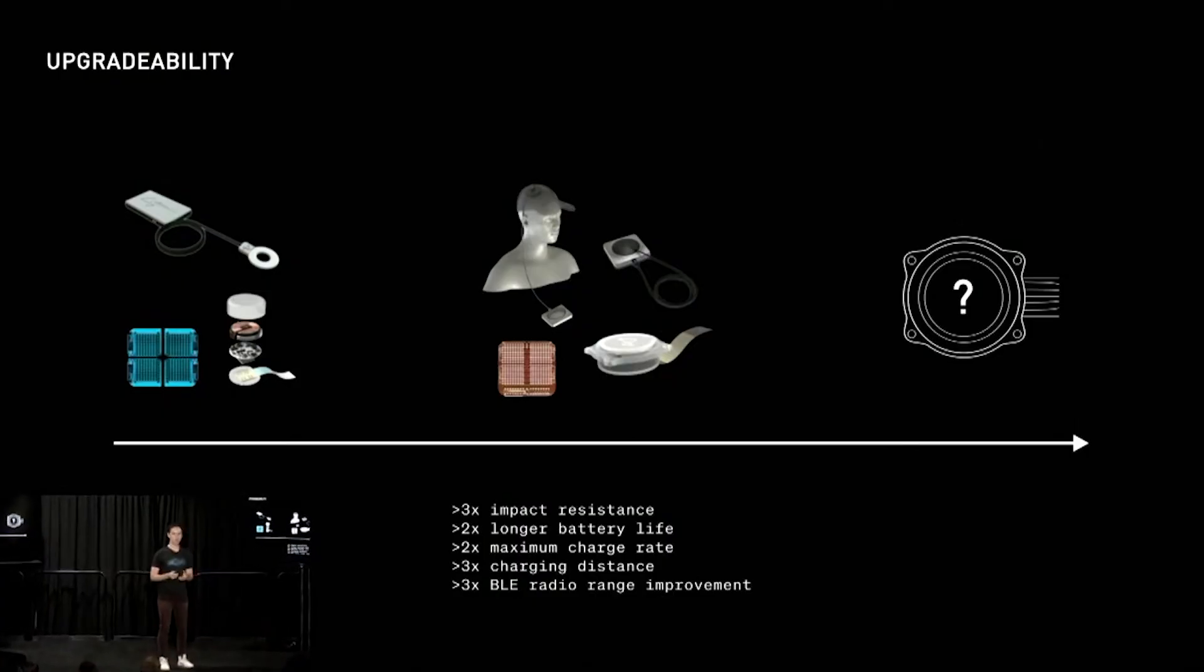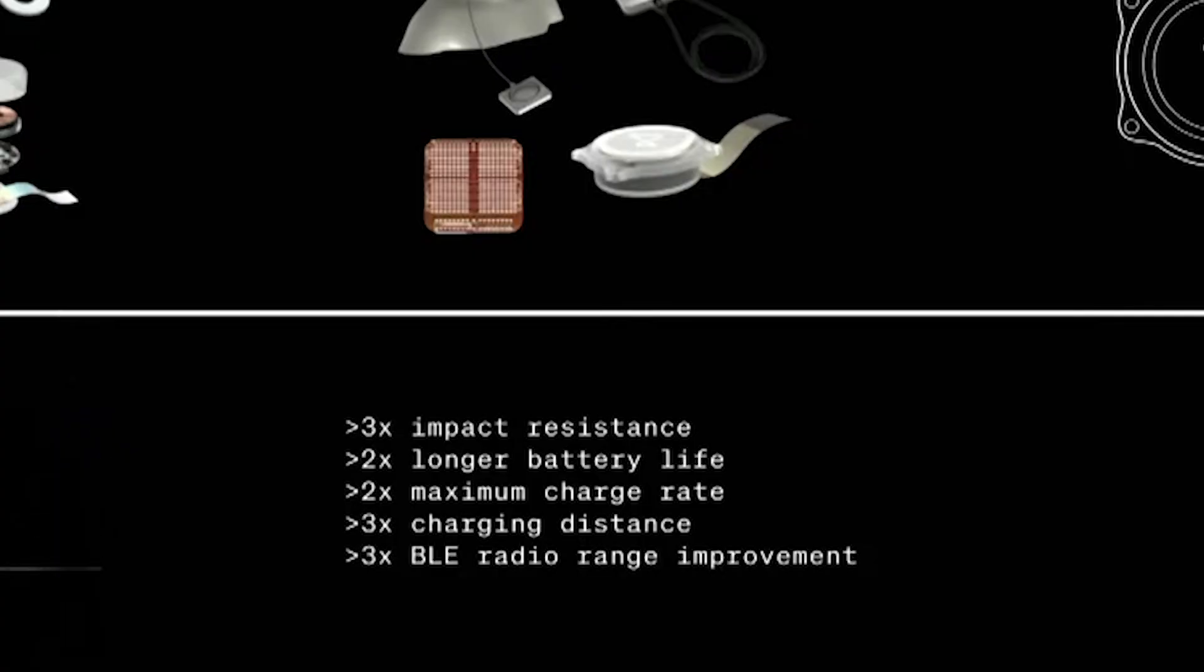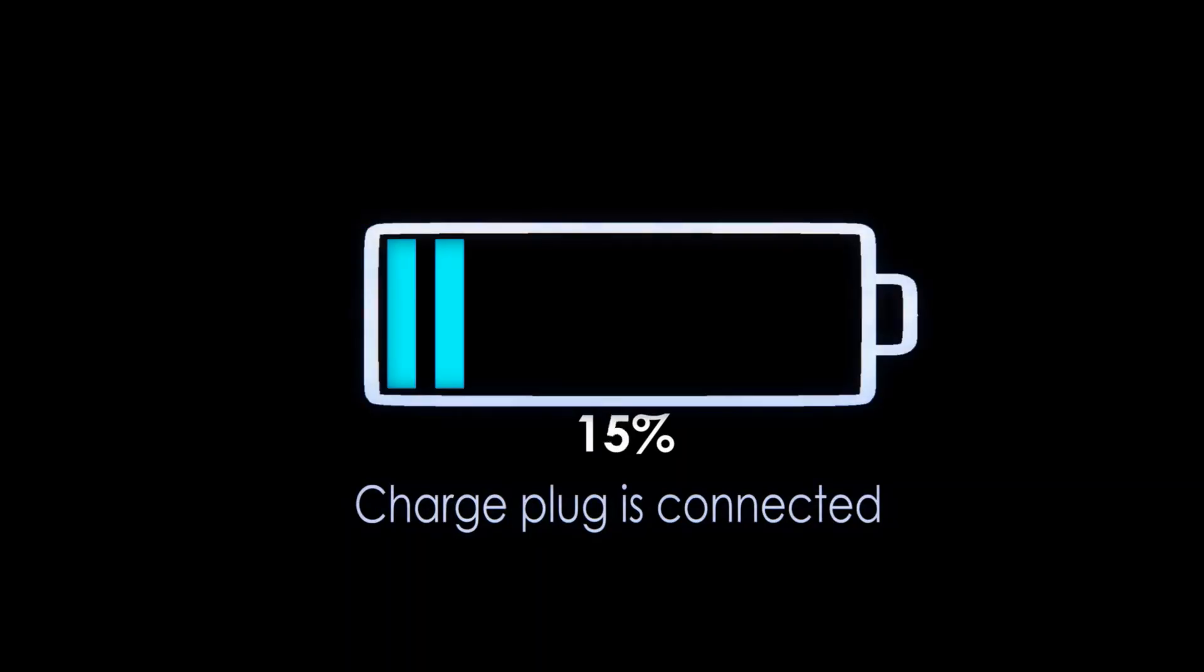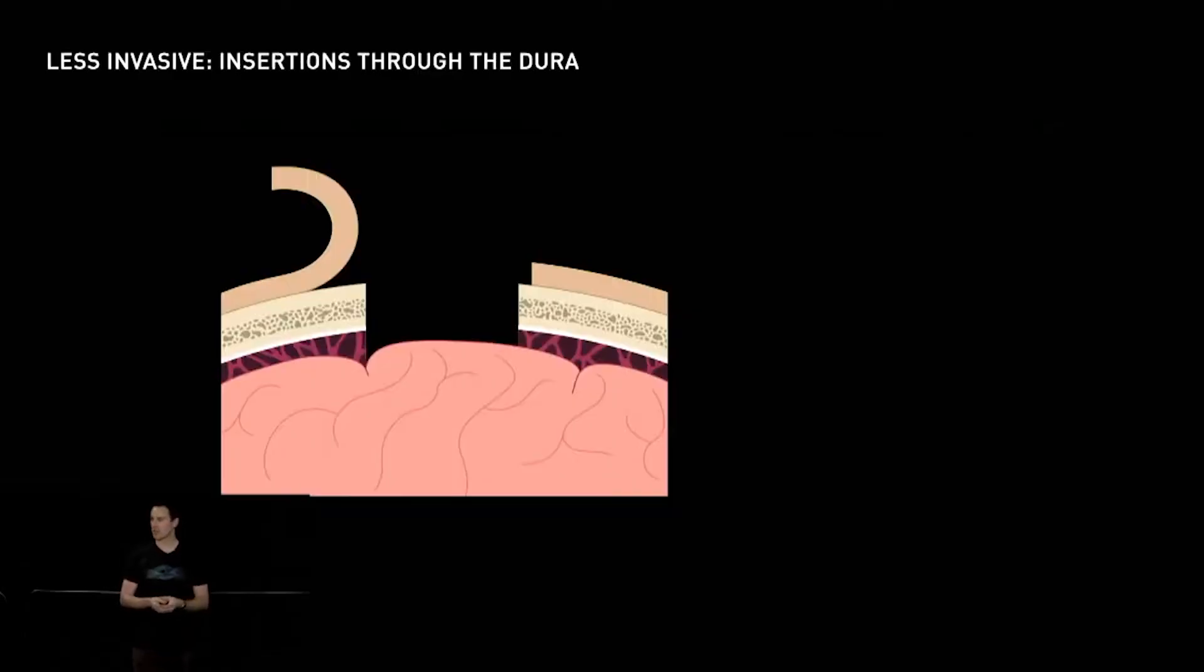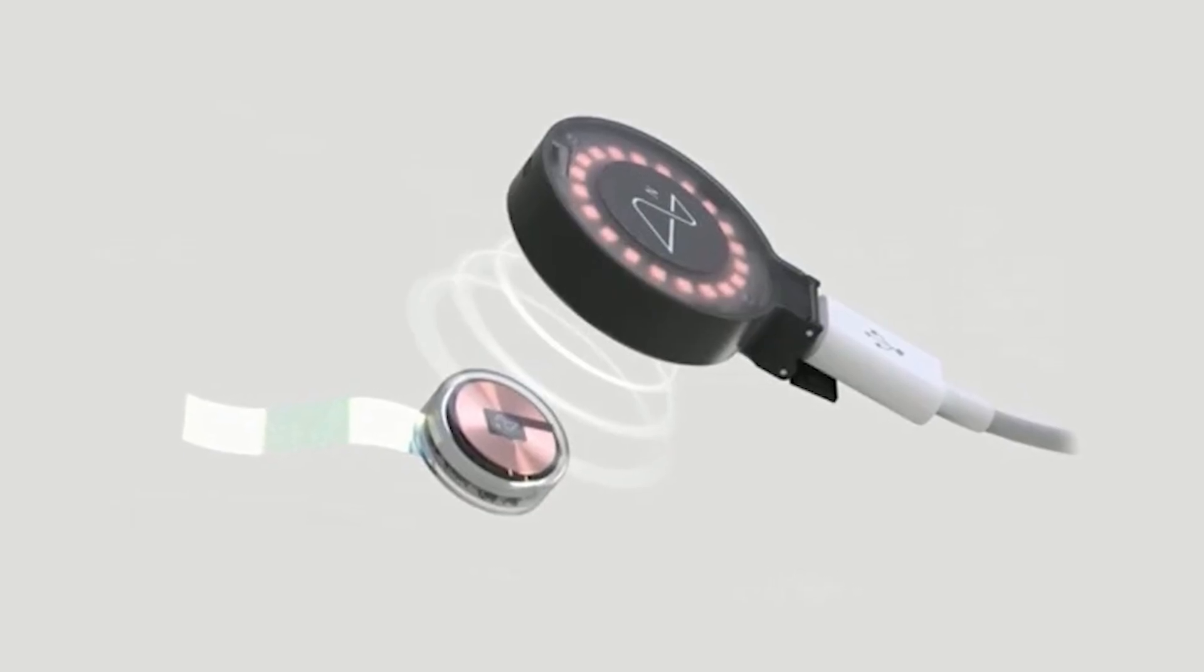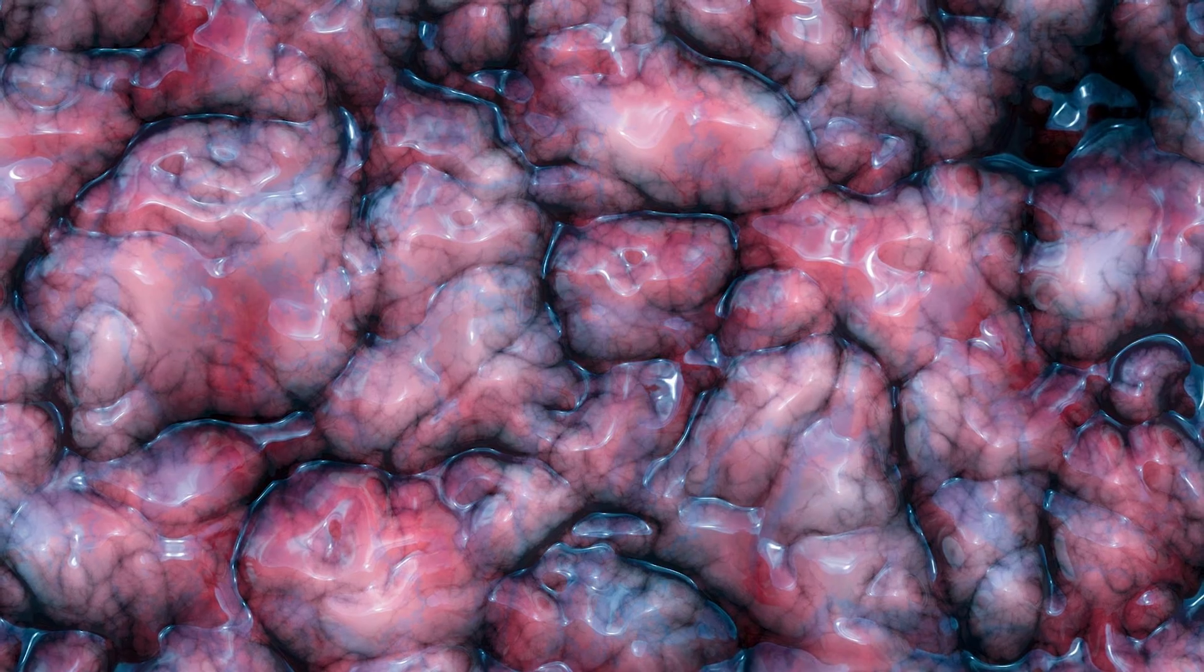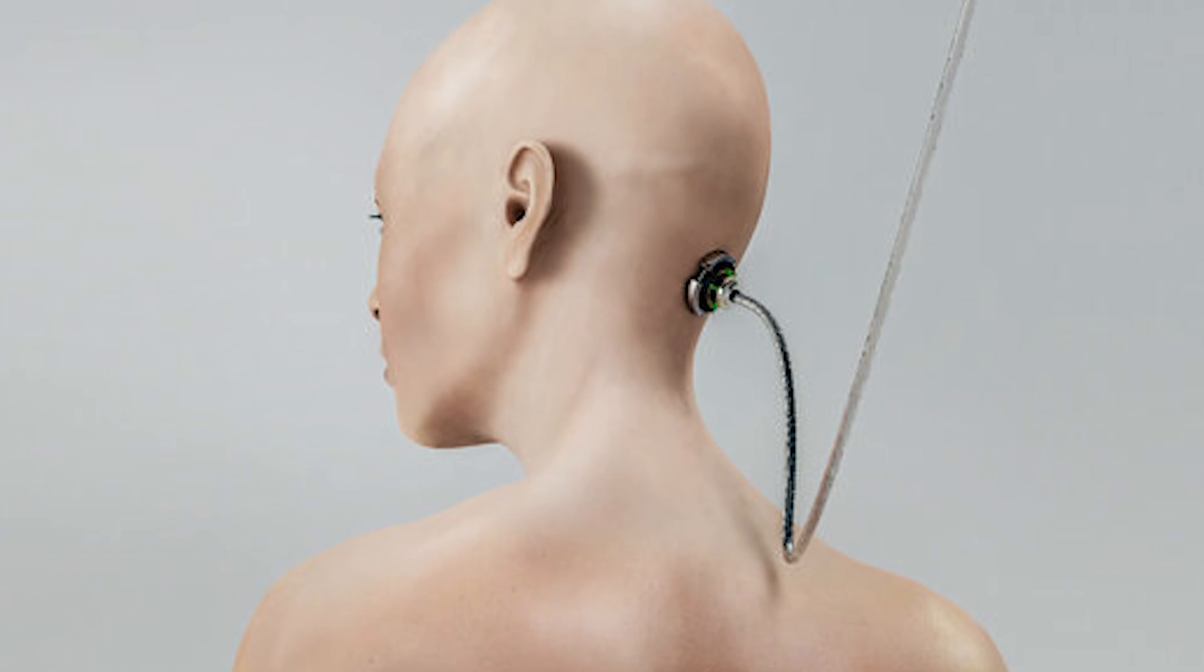The company said that since the earliest versions of their implant device, they've been able to improve the N1 with 3 times greater impact resistance, 2 times longer battery life, 2 times higher maximum charging rate, 3 times longer charging distance, and with a 3 times greater Bluetooth wireless range improvement. The wireless charging technology is actually very important to the success of the N1 device because it sits underneath the skin. It is very difficult to perfectly line up the implant with the charging coil, so the inductive charging needs to be able to work from a distance. They also need to make the charging process safe for brain tissue. The device can't get hot when it charges, but it also needs to charge quickly so that the patient isn't just sitting there with a charging coil on their head for hours every day.